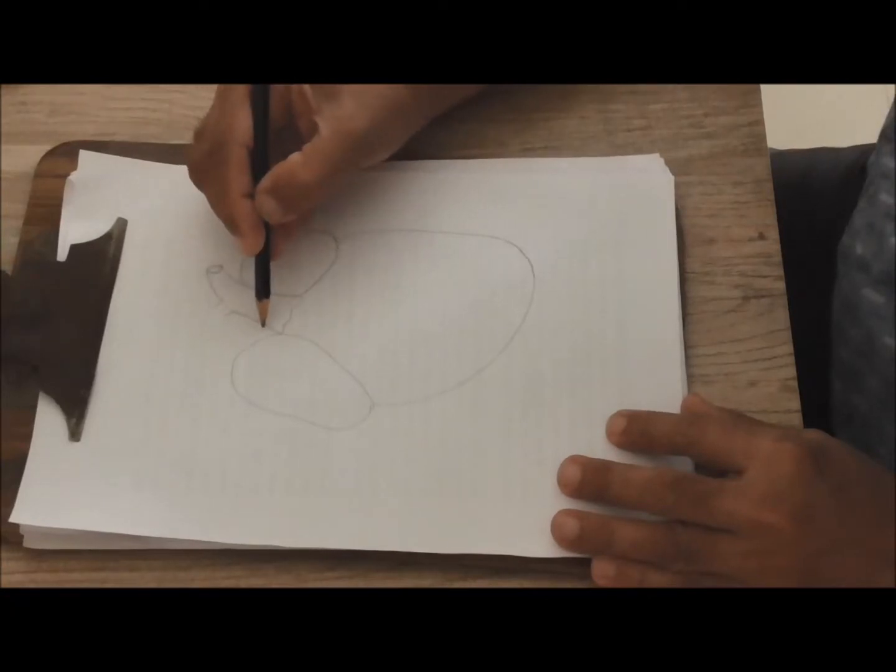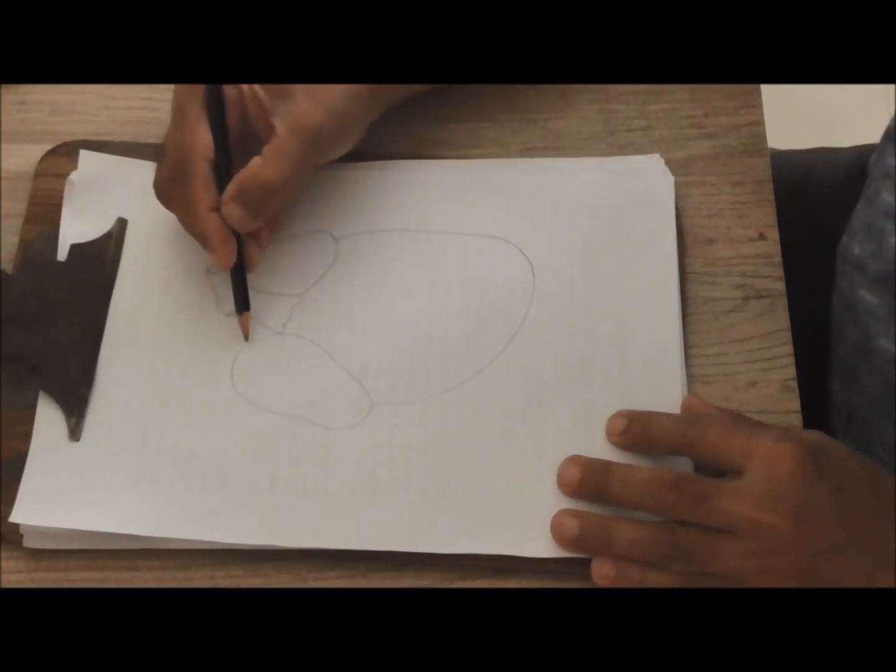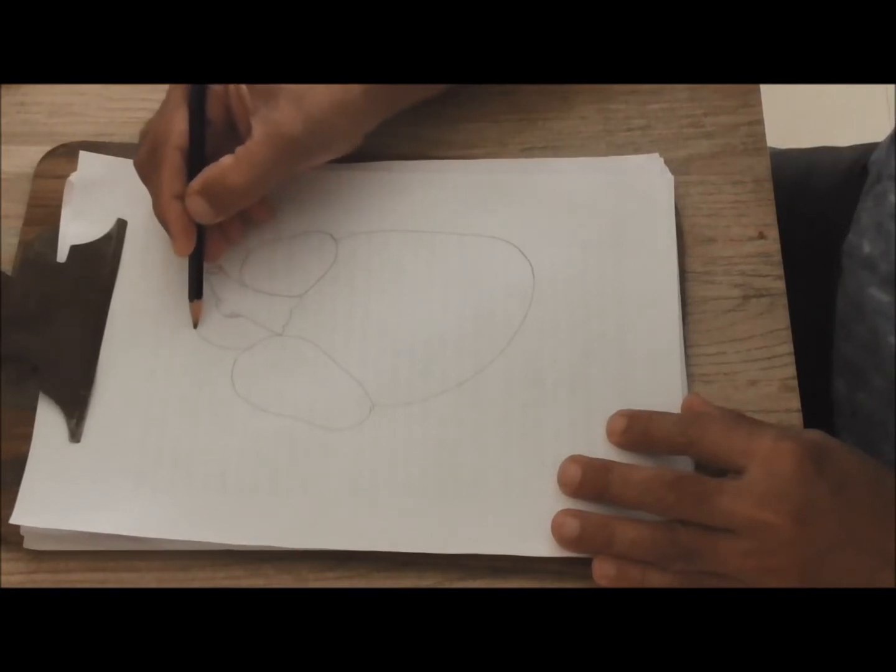Here is aorta, the first branch. Brachiocephalic, right one and the left one. Cephalic and brachial are separate.